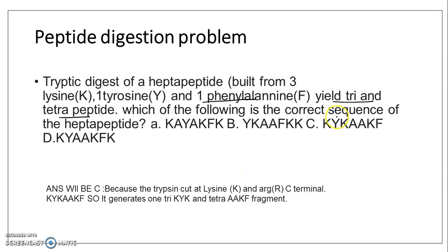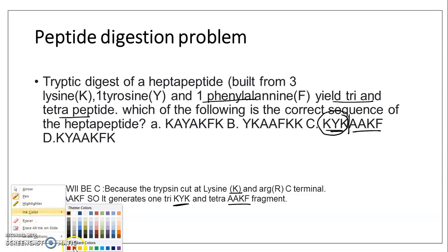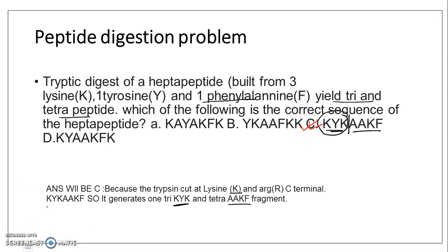Lysine is K and arginine is R. Here, treating with trypsin generates a tripeptide and a tetrapeptide fragment. The C-terminal cut at lysine gives those fragments, so option C is the correct answer for this question.